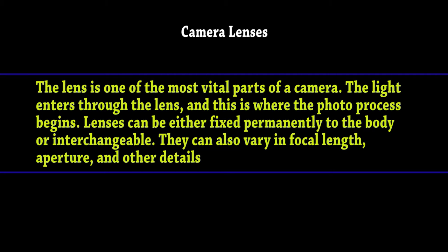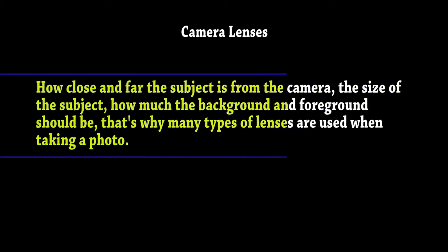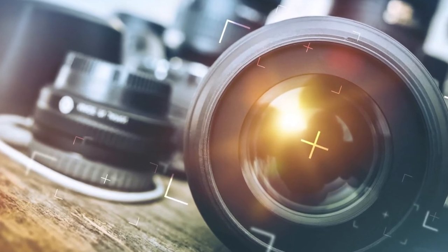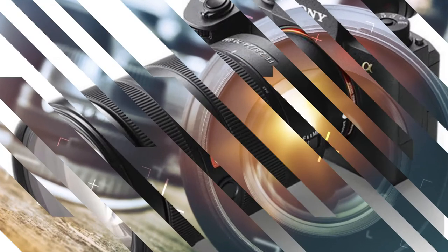Lenses can also vary in focal length, aperture, and other details — such as how close and far the subject is from the camera, the size of the subject, and how much the background and foreground should be included. That is why many types of lenses are used when taking a photo, as we can understand by looking at these images.